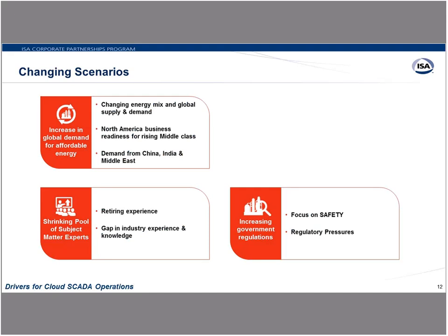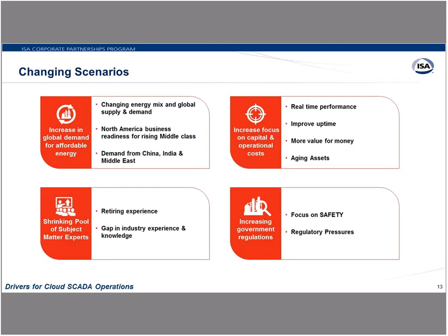Third, increasing government regulations. In the pipeline industry and other oil and gas industries, when a regulation is put in place it's there to stay, and there's a lot of focus on safety. Start the gears turning on how a cloud hosted solution can help enable you to achieve compliance a little bit better. Fourth, there is always an increased focus on expenditures, whether capital or operational costs. With current technologies and advancements in software and the Industrial Internet of Things, people are looking for improved uptime and more value for their money — what do I do with my aging assets and how do I prevent them from becoming aging tomorrow?